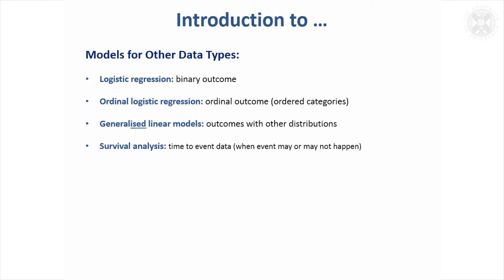There's a closely related type of model known as ordinal logistic regression, which is suitable for ordered categories. There's also a general class of models — confusingly with a very similar name to general linear models — called generalised linear models, suitable for data that have other types of distributions. They do have to have some kind of distribution, but it can be other than a normal distribution.